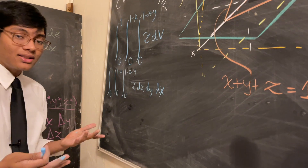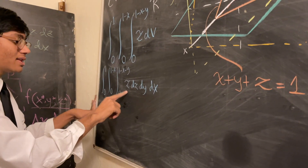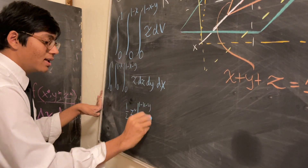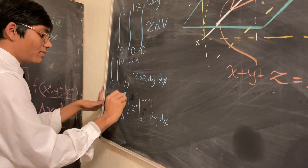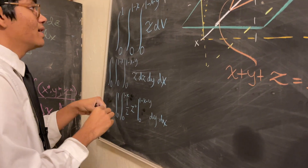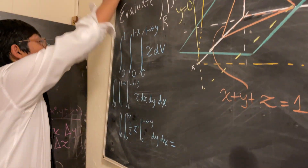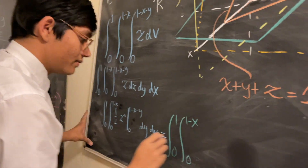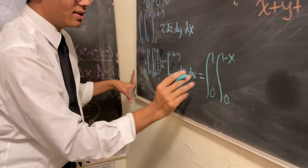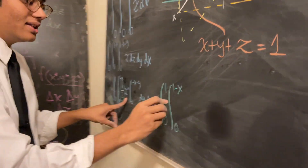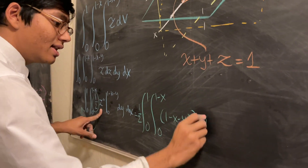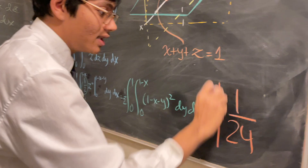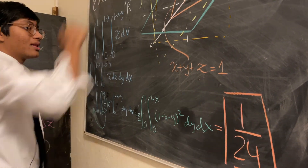The rest is just computation. Integrating Z with respect to Z gives one-half Z squared, evaluated from Z equals zero to one minus X minus Y, giving one-half times (one minus X minus Y) squared, dY dX, with outer limits zero to one minus X and zero to one. Plugging this into your calculator gives a final answer of one over 24. And that, ladies and gentlemen, is it for this episode of Calculus 3. We'll check you out in the next episode.